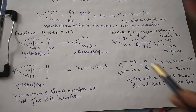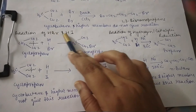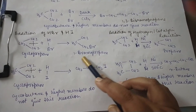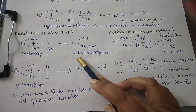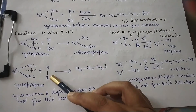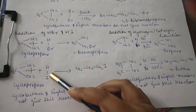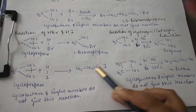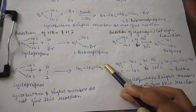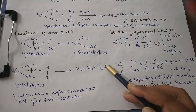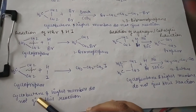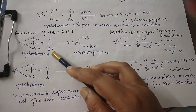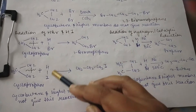Now let's see the addition of HBr and HI. Cyclopropane reacts with HBr to give 1-bromopropane — the ring opens. Another example: with HI addition, the ring opens and iodine adds on the first carbon. Cyclobutane and higher members do not give this reaction with HBr and HI.